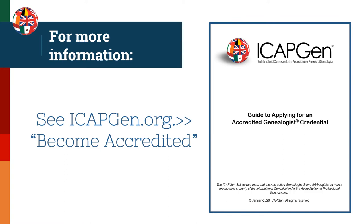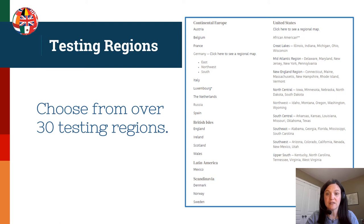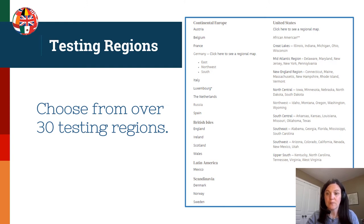To begin, you'll want to choose from one of over 30 different testing regions to specialize in. ICAPGen bases the credential on a specific testing region because it allows you to become more expert in that region. Tests for additional regions are in various stages of development. I personally am accredited in doing research in Denmark, but that doesn't mean I only know how to do research there — my Danish research skills help me across Scandinavia, several European countries, and the US basics.